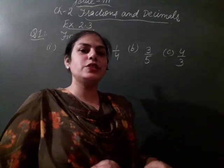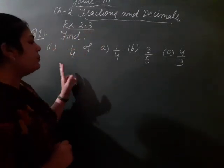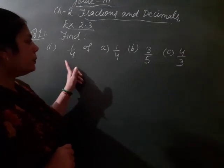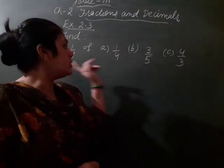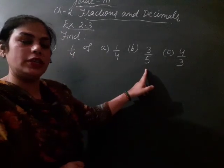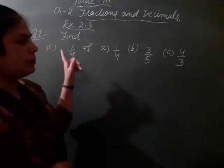Hello students, now we start our first question which says Ex 2.3. You have to find 1 by 4 of 1 by 4, and second part is 1 by 4 of 3 by 5, and third part is 1 by 4 of 4 by 3.